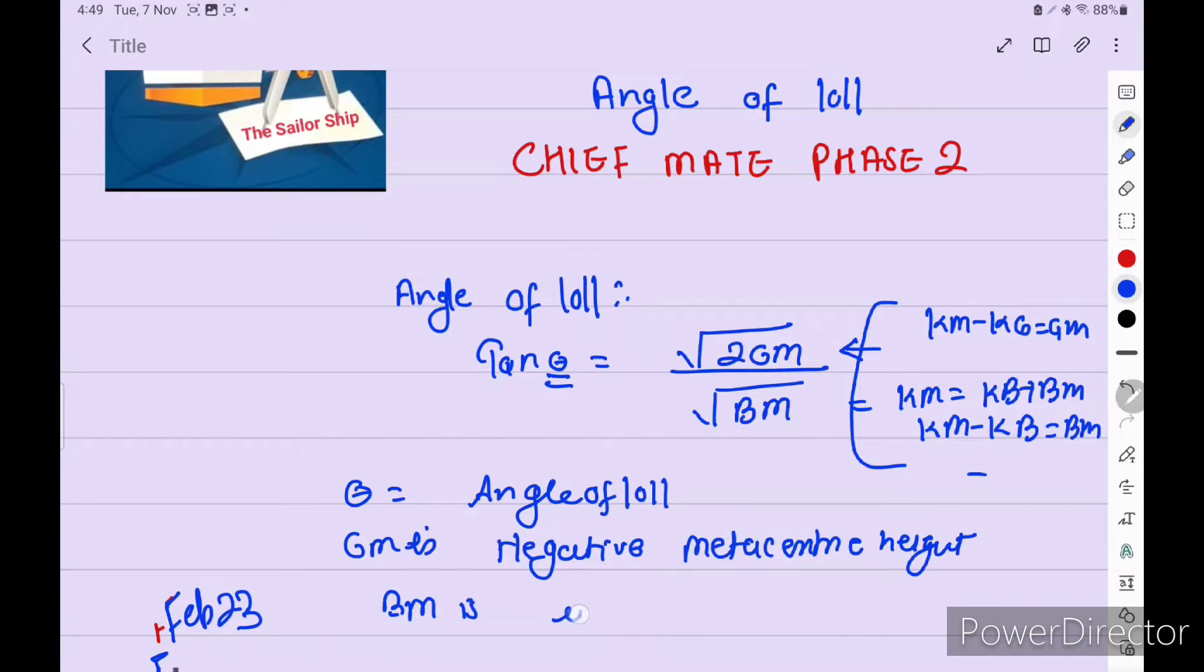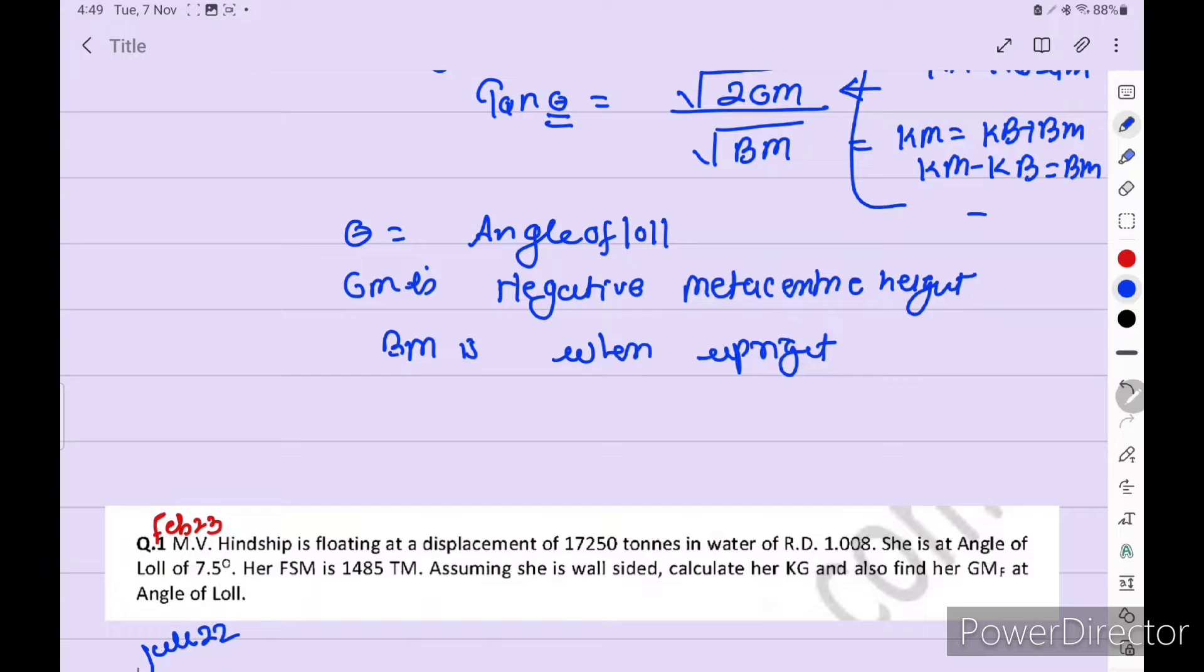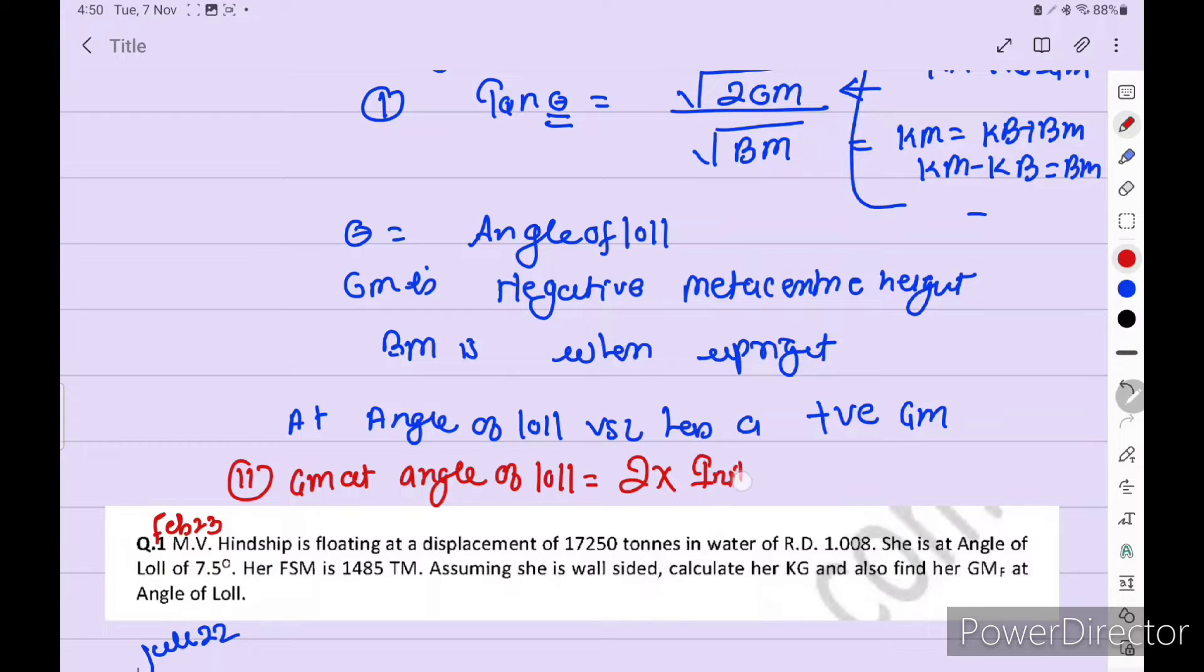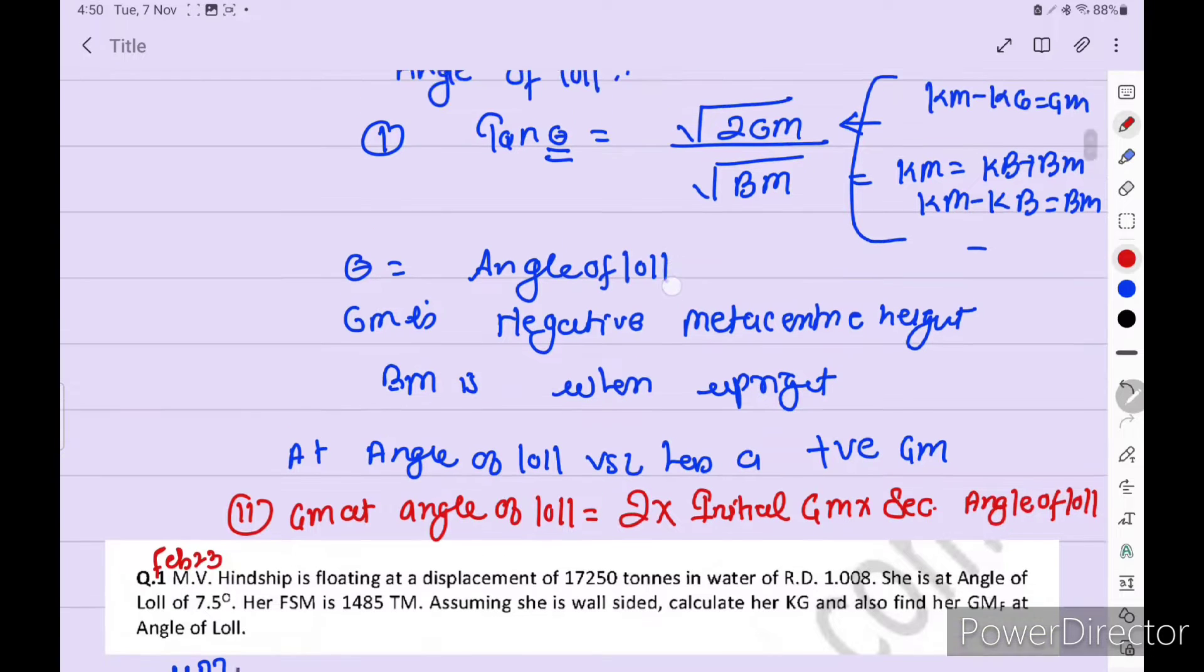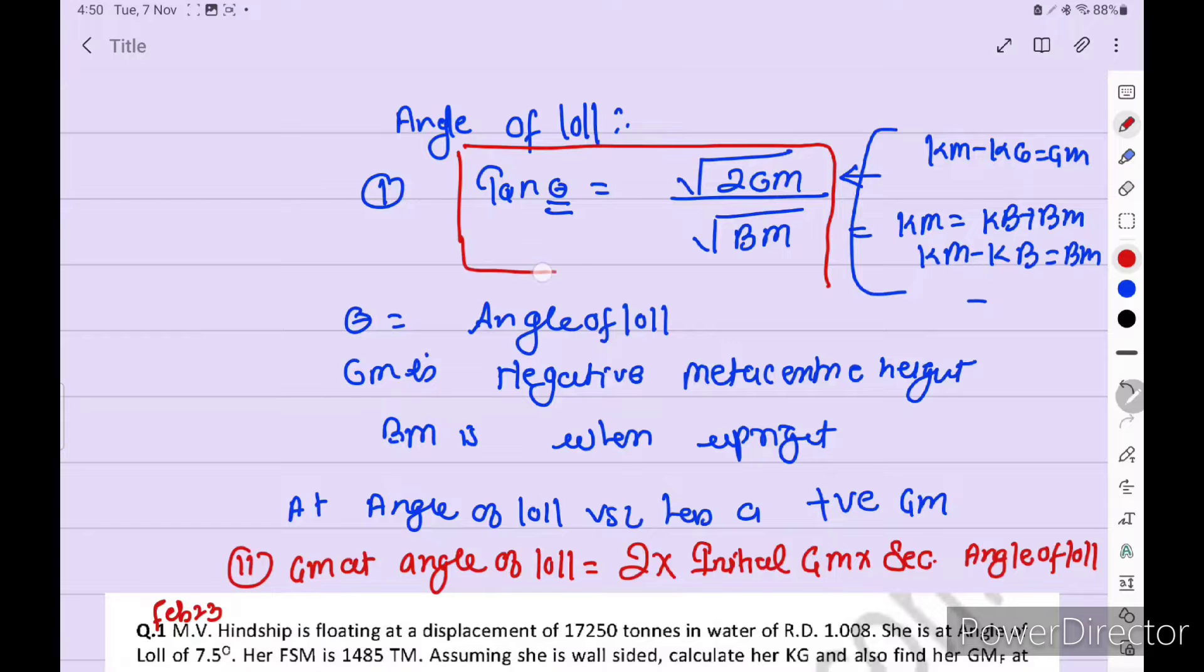BM is when vessel upright. At angle of loll, vessel has a positive GM. Okay, there is one formula for this one. Another formula is this.